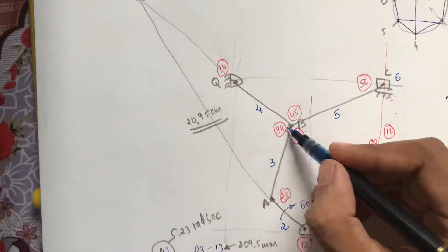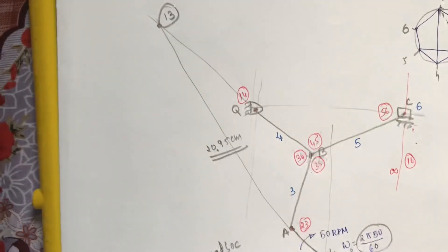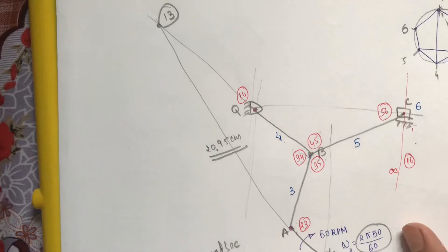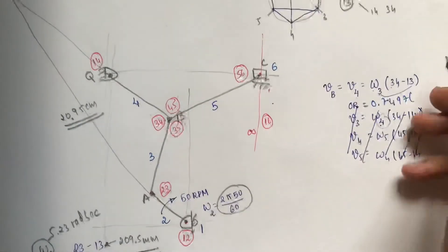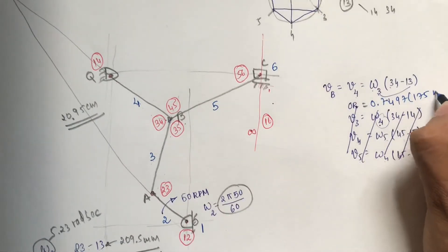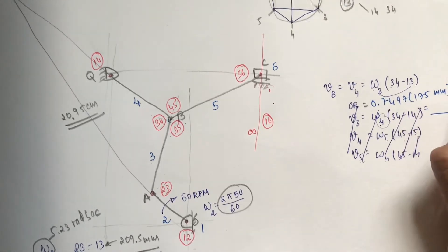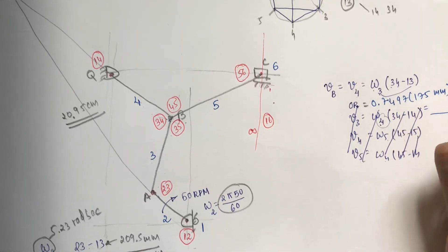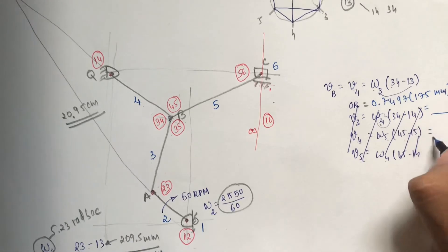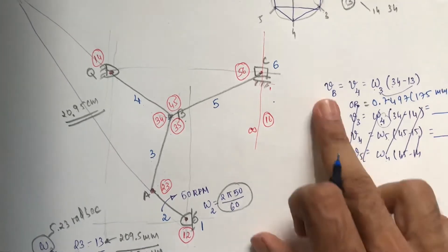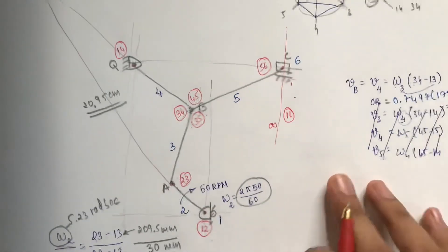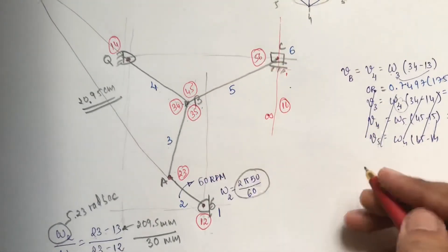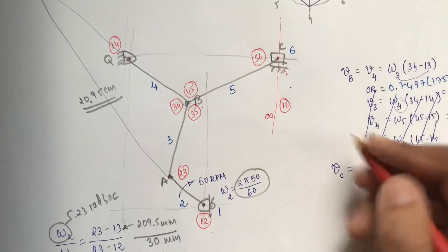Using the formula for velocity of B: omega_3 × distance(3-4 to 1-3). The distance between IC 3-4 and IC 1-3 is 175 mm. So V_B = 0.749 × 0.175 = answer in meters per second. That is the velocity of B.